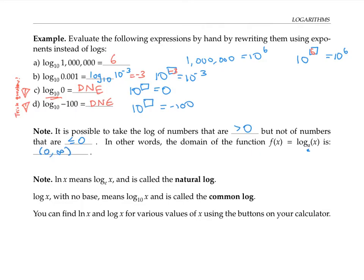A few notes on notation. When you see ln of x, that's called natural log, and it means the log base e of x, where e is that famous number that's about 2.718. When you see log of x with no base at all, by convention that means log base 10 of x, and it's called the common log. Most scientific calculators have buttons for natural log and for common log.